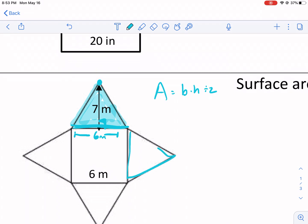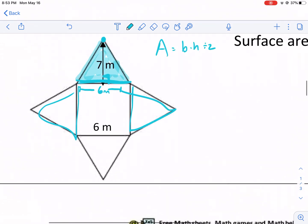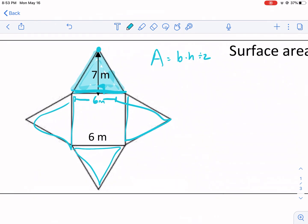Now, I have four of these triangles, so I'm just going to multiply this by four. I have four of those triangles that I multiply by four, and I keep in mind that my base is six, my height is seven, and then I divide that by two. That's 42 divided by two, which is 21. But again, I have four of those, so I need to multiply that by four, and that gives me 84 meters squared.